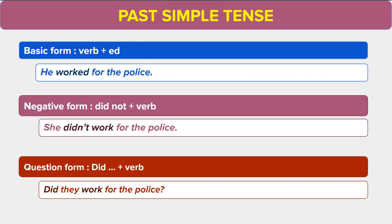Now I will tell you how to make negative and question forms. The basic form is adding 'ed' to the regular verb. For example: 'He worked for the police.' The negative form is created by adding 'did not' before the verb. For example: 'She didn't work for the police.' The question form starts with 'did' and uses the simple form of the verb. For example: 'Did they work for the police?'